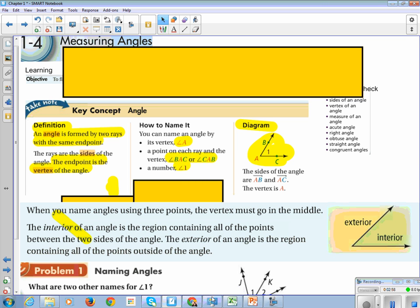The interior of an angle is the region containing all of the points between the two sides of the angle, and the exterior of the angle is the region containing all of the points outside the angle.